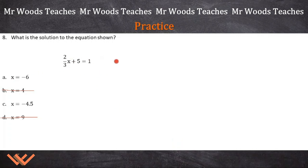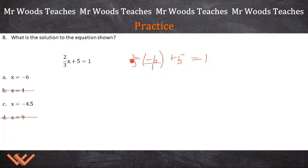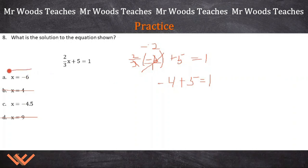Let's try x equals negative 6. So 2 thirds times negative 6 plus 5 equals 1. Well, this is actually negative 6 over 1. So 3 times 1 is 3, and 3 goes into 6 two times. So it's 2 times negative 2, that's negative 4. Negative 4 plus 5 equals 1 — that is true. So x equals negative 6 is a solution.